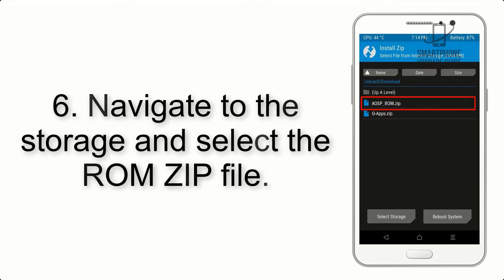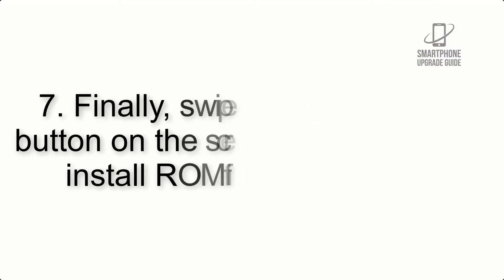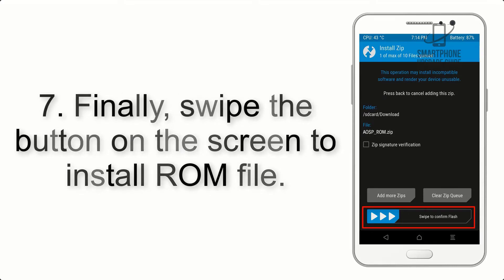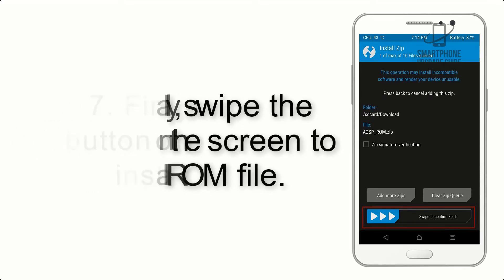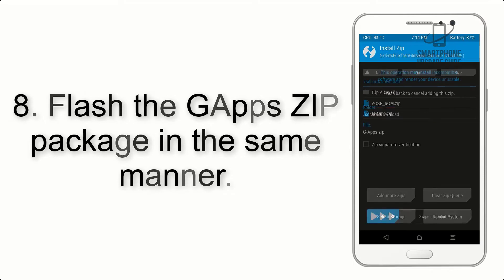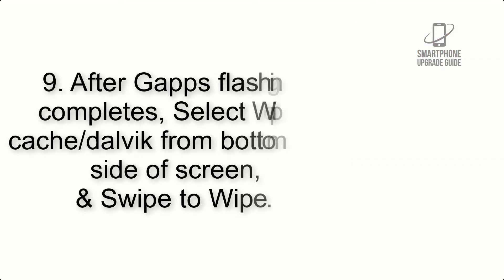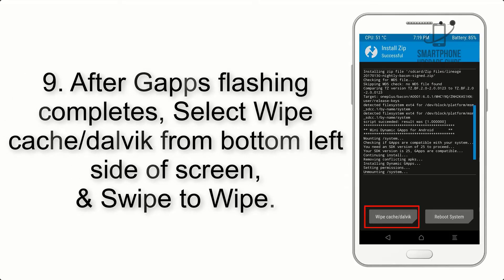Step 5: Go back to the recovery main screen and tap on the Install button. Step 6: Navigate to the storage and select the ROM zip file. Step 7: Finally, swipe the button on the screen to install the ROM file. Step 8: Flash the G apps zip package in the same manner.